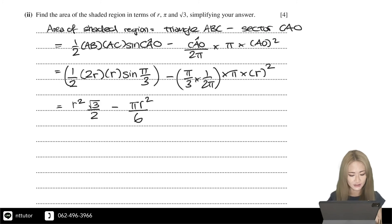The second term simplifies to π R squared over 6. We can factorize this and simplify this a bit. We can take R squared out from both terms, so it equals R squared multiplied by root 3 over 2 minus π over 6.